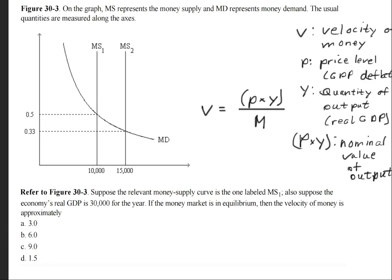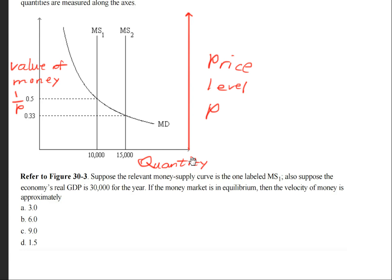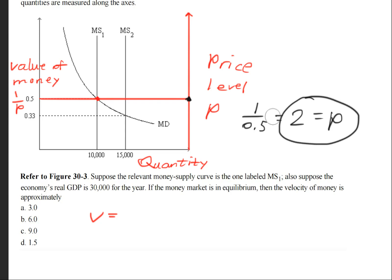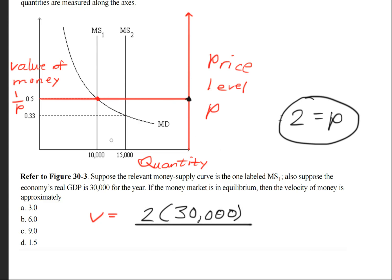With that in mind, let's plug it into the velocity formula. The equilibrium point shows 0.5 on the 1/P axis. Drawing straight across, we have to flip it: 1 over 0.5 gives us 2. So P equals 2 — that's the value we want. Therefore V equals 2 times 30,000 divided by the quantity of money. Following the equilibrium point all the way down, we get 10,000. This results in an answer of 6 — answer choice B.